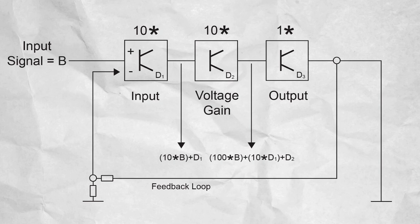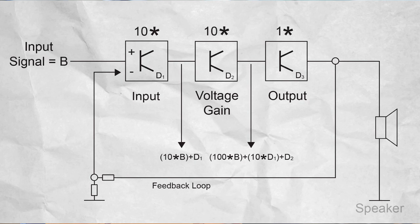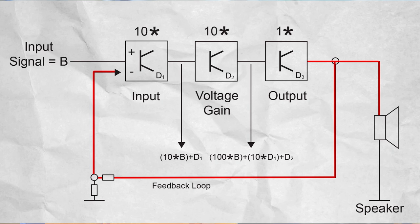Negative feedback is used to reduce this distortion. There are several problems with a normal global feedback approach. The speaker will have a kickback to the amplifier and this kickback signal will go straight into the input stage.